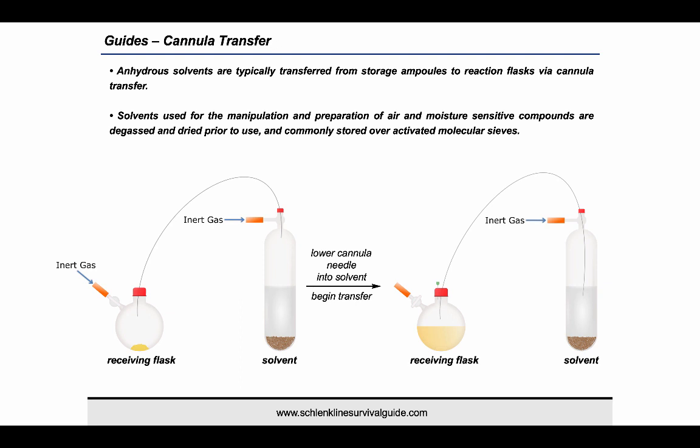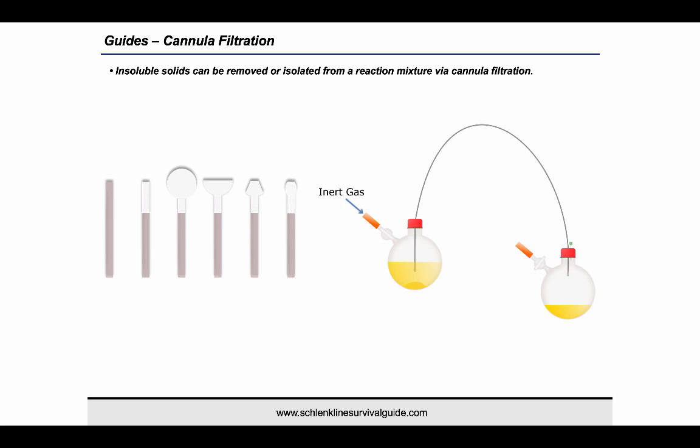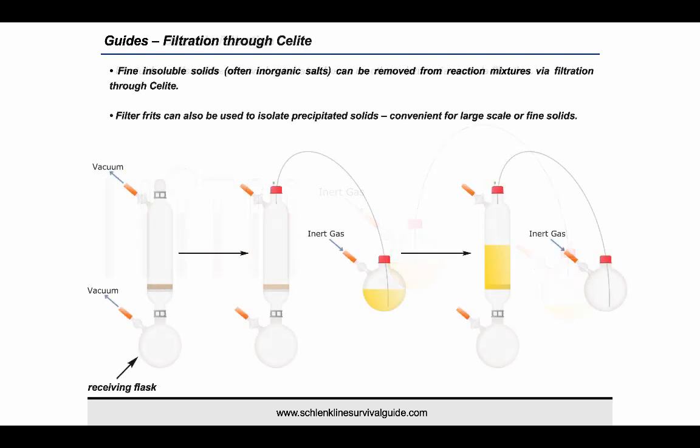The same method can be used to transfer solutions or other liquids between two different flasks. Solids can be isolated or removed using a filter cannula. These can be easily prepared using a flat-ended cannula, Teflon tape, and a glass microfiber filter paper. The same cannula transfer method is then applied but higher inert gas pressures may be required to enable the filtration. For the removal of fine solids such as inorganic salts, it is recommended to perform a filtration through Celite. The filter stick is first assembled by placing oven-dried Celite into a glass-fritted filter stick and connecting it to a receiving Schlenk flask. A Schlenk cap or Viking helmet is placed on the top and the filter stick is then cycled onto the Schlenk line.